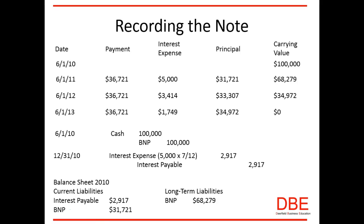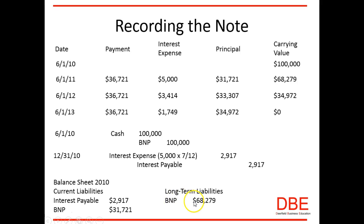On the balance sheet for 2010, the interest payable of two thousand nine hundred and seventeen dollars is a current liability. In the upcoming year we're going to be paying off thirty-one thousand seven hundred and twenty-one dollars of the note, so that portion goes into the current liability section. The remaining carrying value of sixty-eight thousand two hundred and seventy-nine dollars will be paid beyond the upcoming year, so that goes into the long-term liability portion.